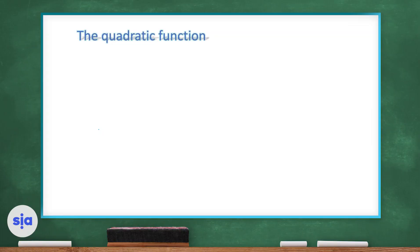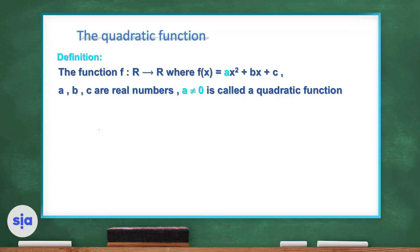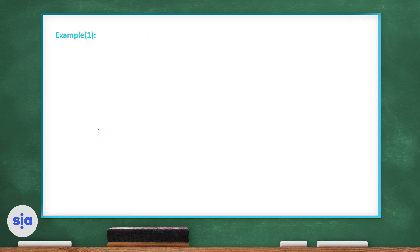Hello everyone, welcome to a new algebra session. Today we'll be talking about the quadratic function. The quadratic function is written as f(x) = ax² + bx + c, where a, b, and c are real numbers and a is not equal to zero.